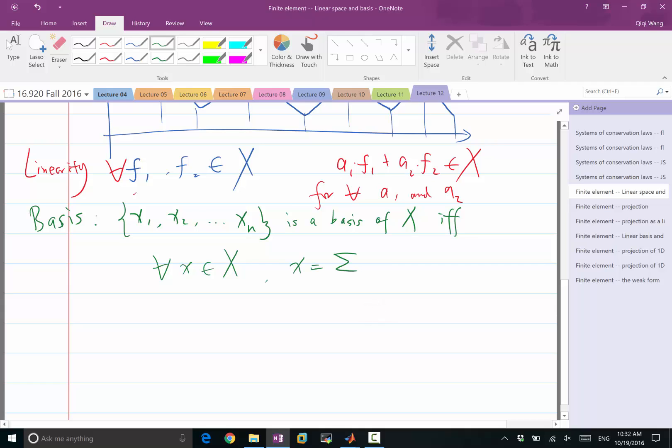for any x in that linear space, x can be represented as a linear combination of these spaces. So this is the first property, but that's not enough.